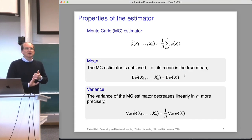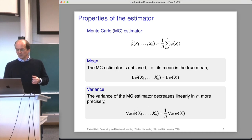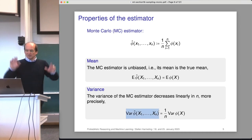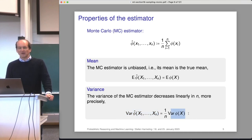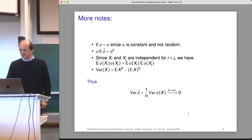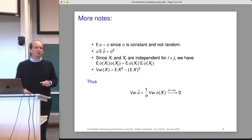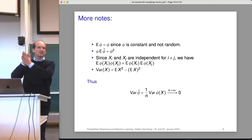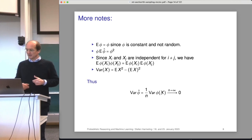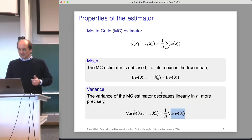We can also say something about the variance. The variance of our MC estimator decreases linearly in n. The variance of the random variable φ̂ is equal to (1/n) times the variance of our random variable. That is a very nice property. It means if I have more and more data, the larger my sample is, the variance will go to zero. That's what we also experienced in the notebook — when I increased the sample, it wasn't as wiggly anymore.